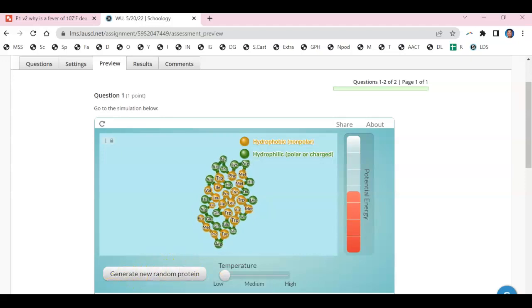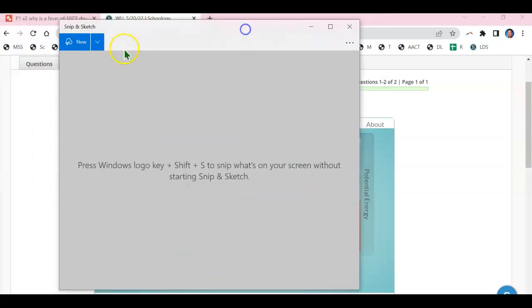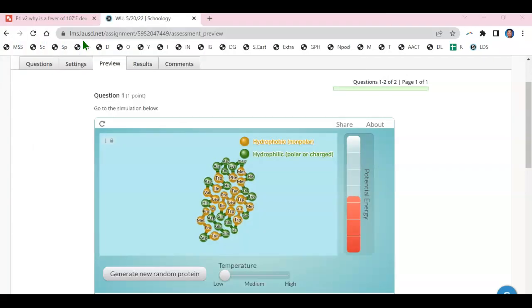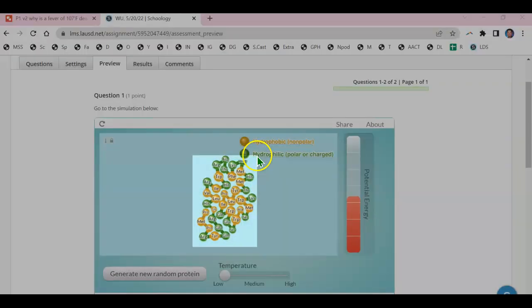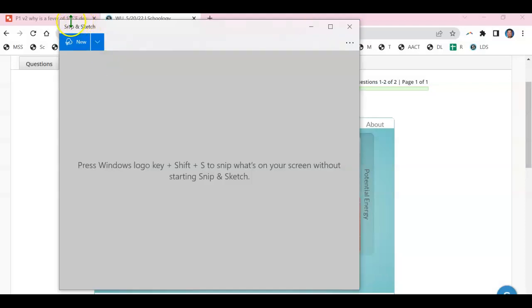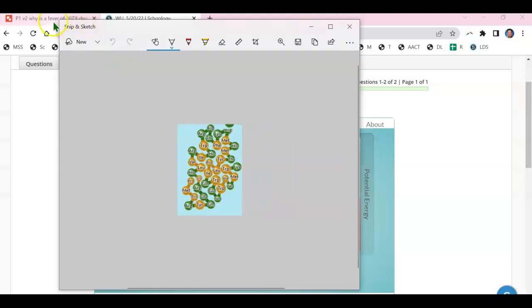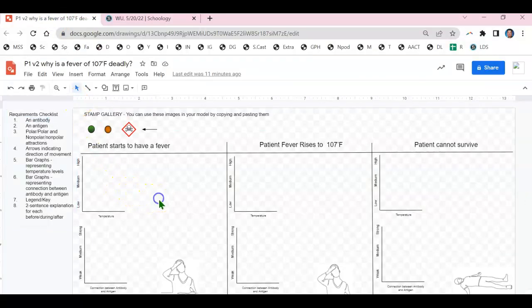After four to five seconds you're going to take a screenshot of the antibody and then you're going to paste it into your Google drawing.